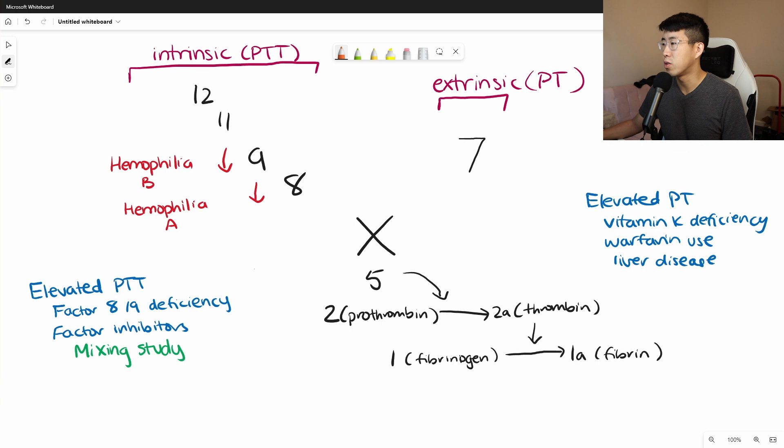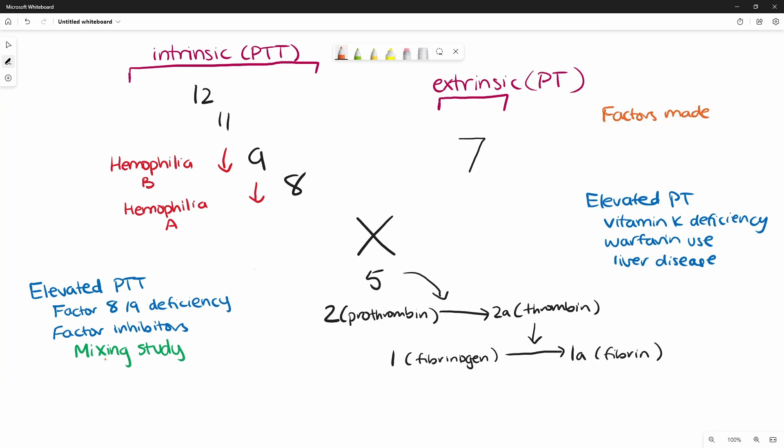That brings up the next point of what factors are made in the liver. And there's an easy way to remember this, and that is DISCO1972. So that is going to help you remember protein S, protein C. Remember those are both anticoagulants.